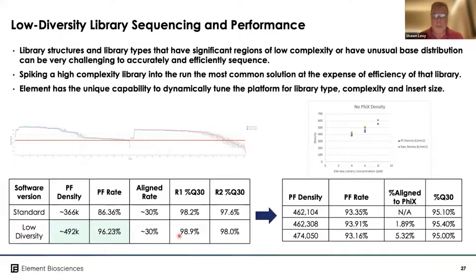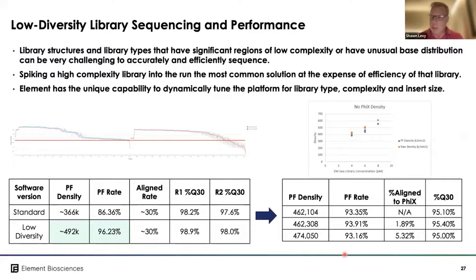We developed a low-diversity analysis pipeline and achieved much improved performance, with pass-filter rates reaching 96%, but we still had to include 30% PhiX. Knowing that giving away 30% of reads was not optimal, we reworked our approach. We've now achieved pass-filter rates above 93% with either zero, two, or five percent PhiX targeted — maintaining very high Q scores and high pass-filter rates. Using PhiX is now an optional capability in these low-diversity conditions.